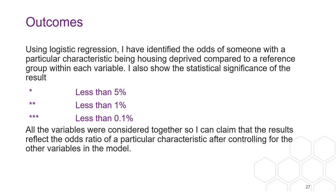For those not familiar: logistic regression is based on a binary outcome and you can use it to model the chances of something happening. You get an odds ratio for a particular characteristic. If it's the same as the reference point for a group, the point would be one. As it goes above one, it would be more likely to happen to that group. You also get the statistical significance of that result.